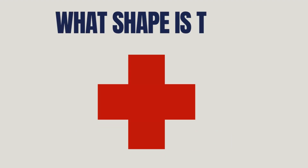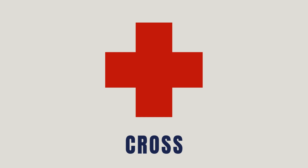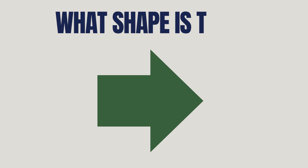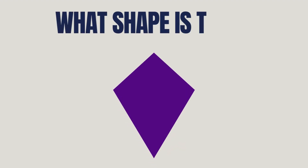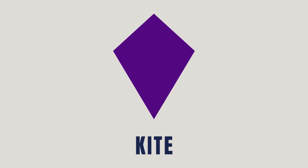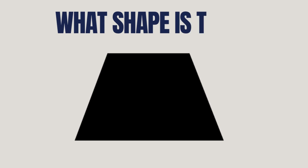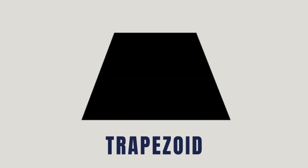What shape is this? It's a cross. What shape is this? It's an arrow. What shape is this? It's a kite. What shape is this? It's a trapezoid.